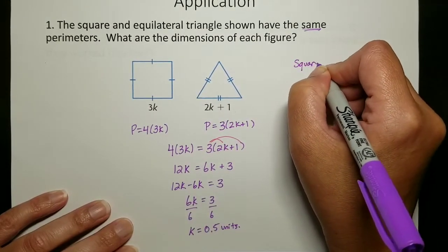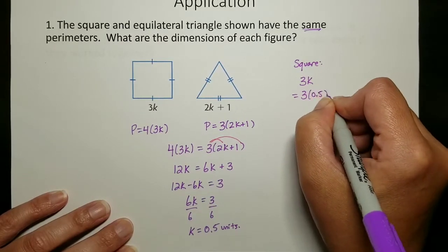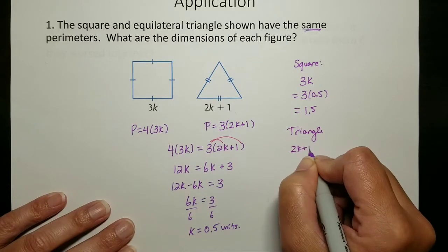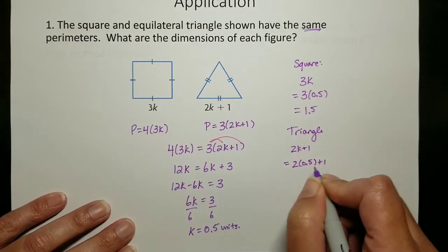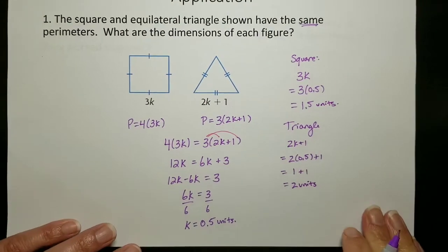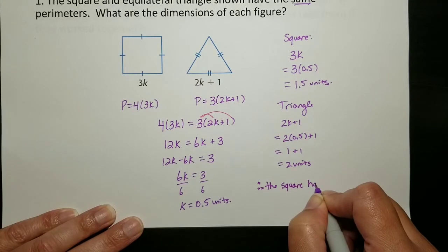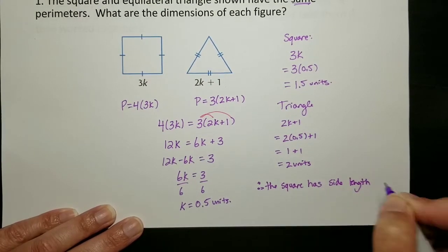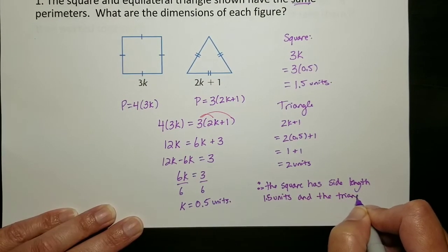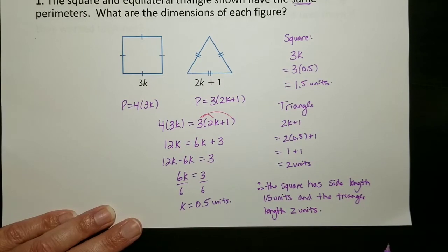So we're going to go back. The square 3k, if k is 0.5, 3 times 0.5 is 1.5. And the triangle is 2k plus 1, so 2 times 0.5 plus 1, which is 2 units. And because it's a word problem, we have to answer with a therefore statement. So I would say therefore the square has side length 1.5 units and the triangle length 2 units. If this said centimeters or meters, you would use those units.